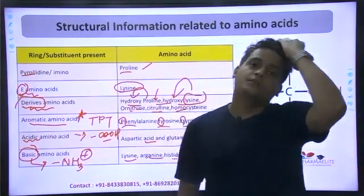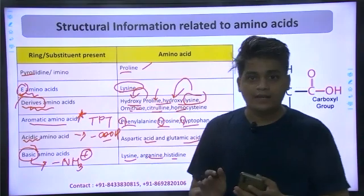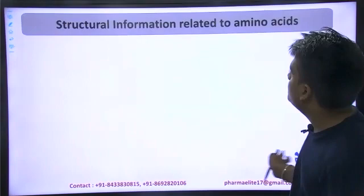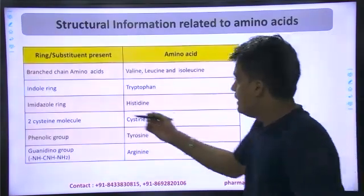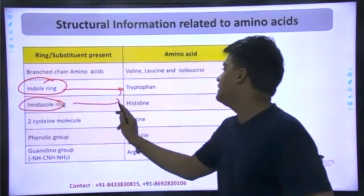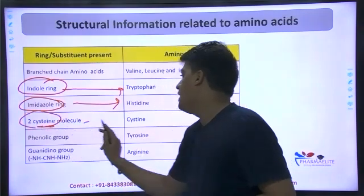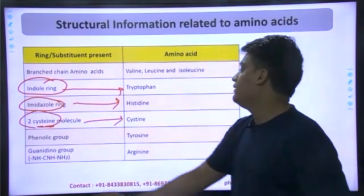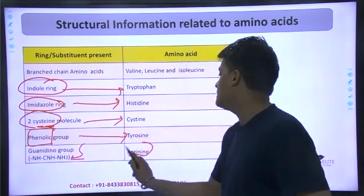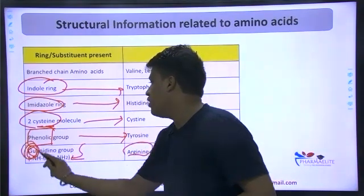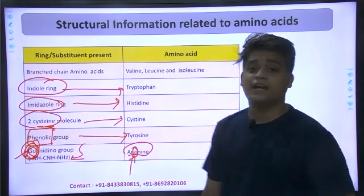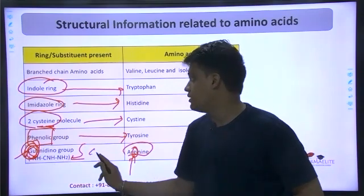This entire classification is important — don't neglect it, don't take it on a lighter note. Questions are possible from here. Going further: indole ring-containing amino acid is Tryptophan; imidazole ring-containing amino acid is Histidine; two cysteine molecules coming together is known as Cystine; phenolic group-containing amino acid is Tyrosine; guanidino group-containing amino acid is Arginine.